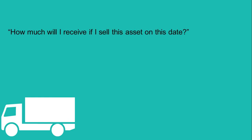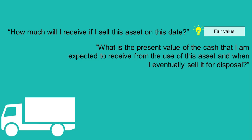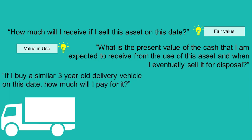For example, say you have a three-year-old delivery vehicle. If the question you ask is 'how much will I receive if I sell this asset on this date?' — that is an exit value, and the measurement basis is fair value. If your question is 'what is the present value of the cash I expect to receive from the use of this asset and when I eventually sell it?' — that is also an exit value, and the measurement basis is value in use. But if your question is 'if I buy a similar three-year-old delivery vehicle — same model, same make — on this date, how much will I pay for it?' — that is an entry value, and in this example it refers to current cost.